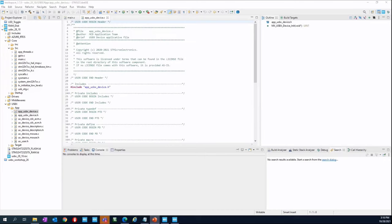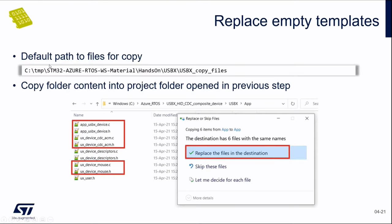To save time, we have prepared a copy folder with content in the installation material provided for the webinar. The files to be copied are at: Azure RTOS Workshop Material → USBX → USBX Copy Files. Please go there — we need to copy these files into the project folder.